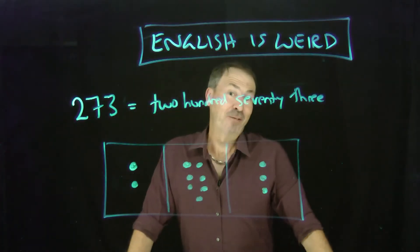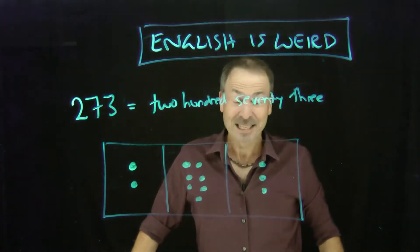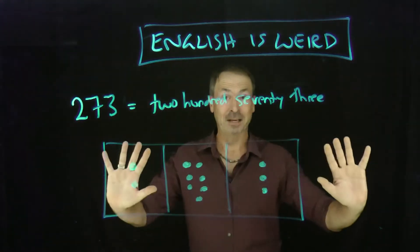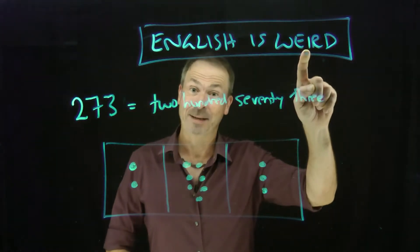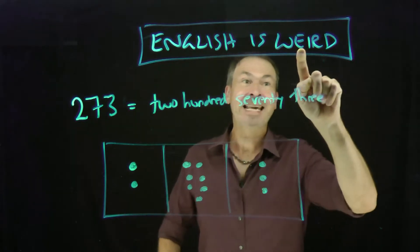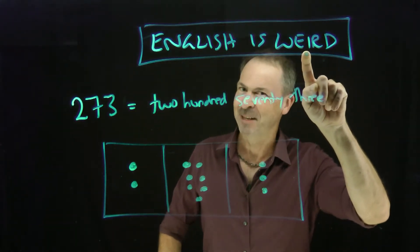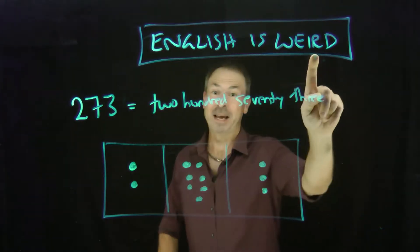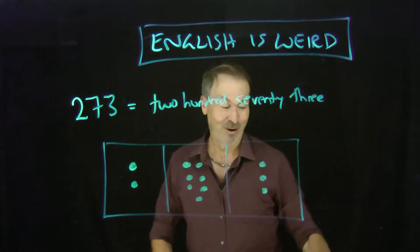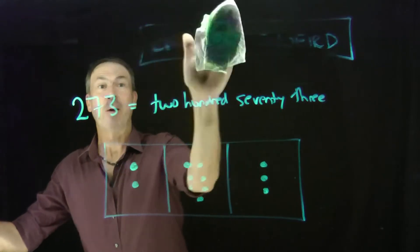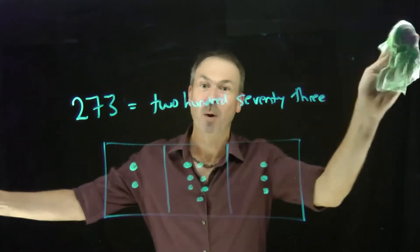I said last time that English is kind of curious and wonderful. Yet sometimes it's just plain weird. For example, look at the word weird. How do we spell it? W-E-I-R-D. I thought it was I before E except after C. The spelling of weird is weird. That's crazy. In fact, English gets a bit weird on how we say and write numbers as well.